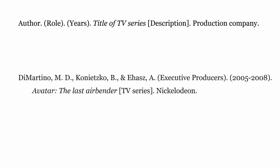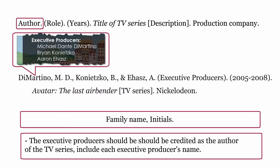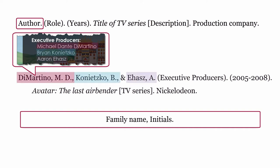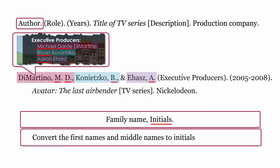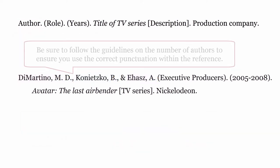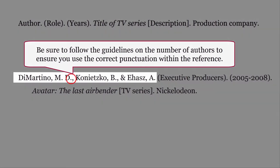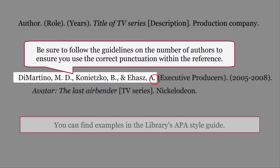To cite a television series, it would look like this. The executive producers should be credited as the authors of the TV series. Include each executive producer's name. Start with the family name, convert the first names and middle names to initials, and include a full stop after each initial. Be sure to follow the guidelines on the number of authors to ensure you use the correct punctuation within the reference. You can find examples in the library's APA style guide.